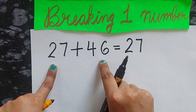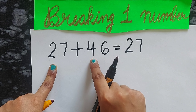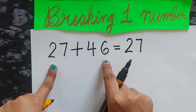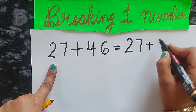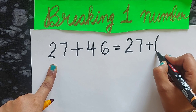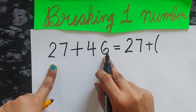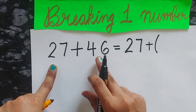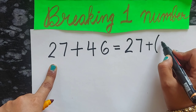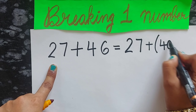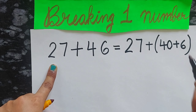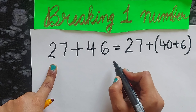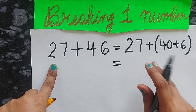Now what is the second number? You try to read it — it's 46. So what you will do is break it into 40 plus 6. Write 40 plus 6 and then close the bracket.